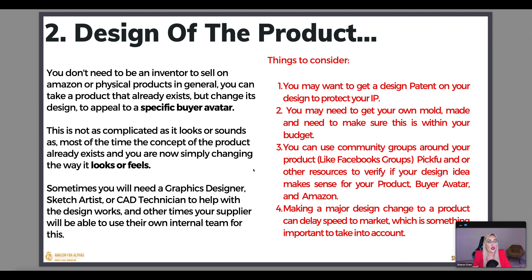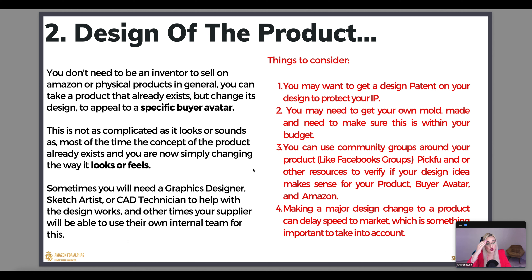The next example is design of the product — probably one of the best ways to differentiate. You don't need to be an inventor to sell on Amazon or sell physical products in general. You can take a product that already exists but change the design to appeal to a very specific buyer avatar or a very specific need. This is not as complicated as it sounds. Most of the time the concept already exists and you're simply changing the way it looks or feels.